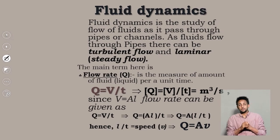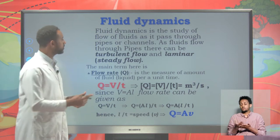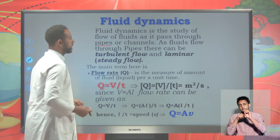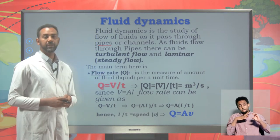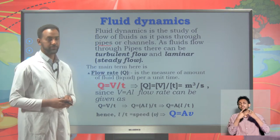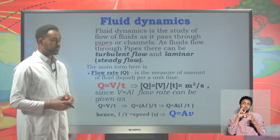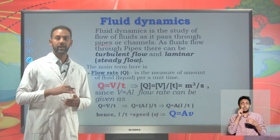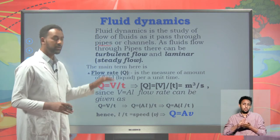Fluid dynamics is a study of the flow of fluids through pipes or channels. As fluids flow through pipes, there can be different types of flow: there will be a turbulent flow or irregular flow, or there might be a streamlined or laminar flow — a uniform flow of fluids.